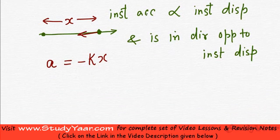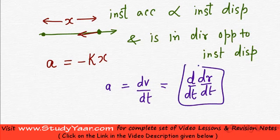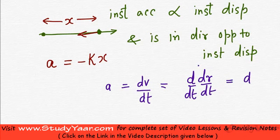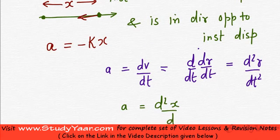In other words, we know that a is equal to dv by dt, which is equal to d by dt of dr by dt. Right. I can also write this as d²r/dt². In this case, my r is x. Therefore, my acceleration is d²x/dt².